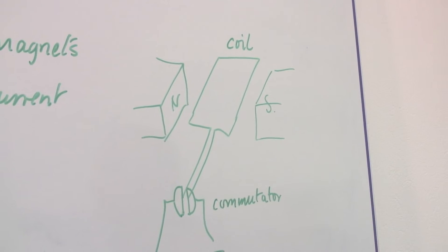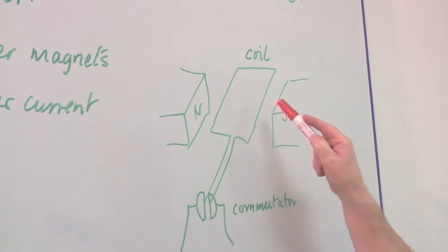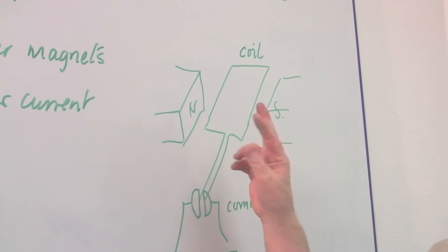I can change over the direction of the motor very simply by making the north this side and the south the other side, change over the magnetic field.